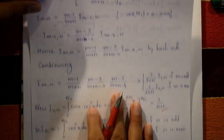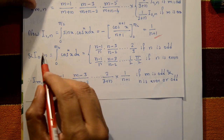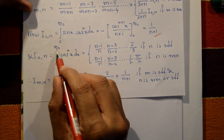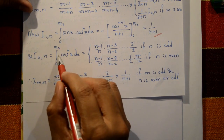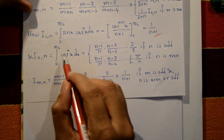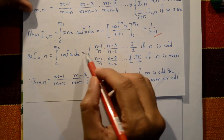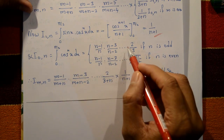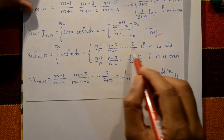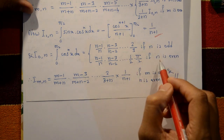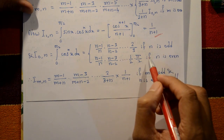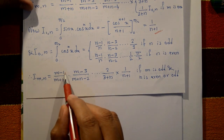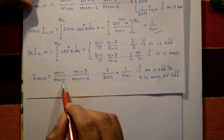For even m, we compute I_(0,n): I_(0,n) = ∫₀^(π/2) sin⁰(x)·cos^n(x) dx = ∫₀^(π/2) cos^n(x) dx. This integral has been proved in previous steps using the standard result for powers of cosine.